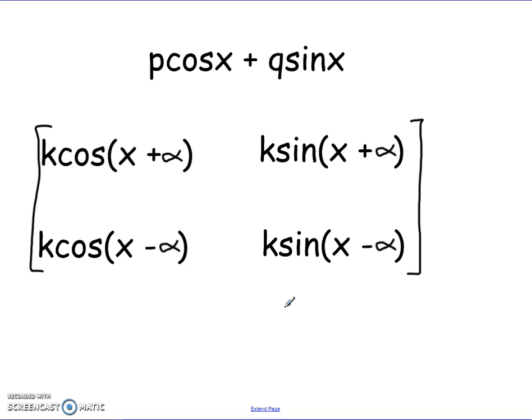Remember, the maximum and minimum value of sine and cosine is 1 and negative 1. For sine, that occurs at 90 degrees or π/2 for its maximum value of 1, and 270 degrees or 3π/2 for its minimum value of negative 1. And for cosine, at 0 and 2π is where its maximum value of 1 occurs, and at π is where its minimum value of negative 1 occurs.